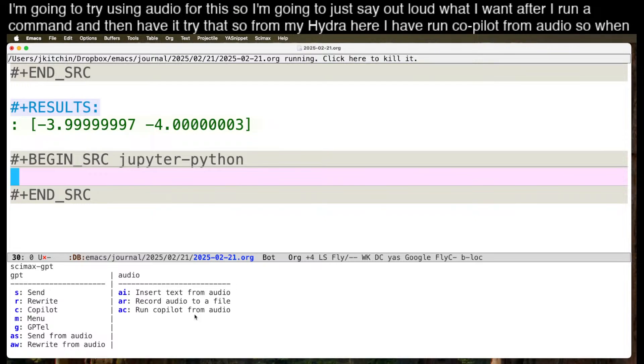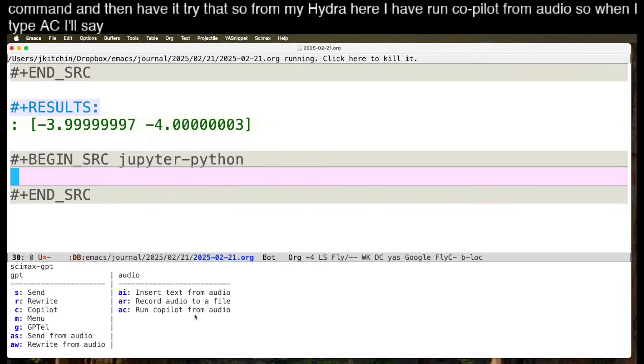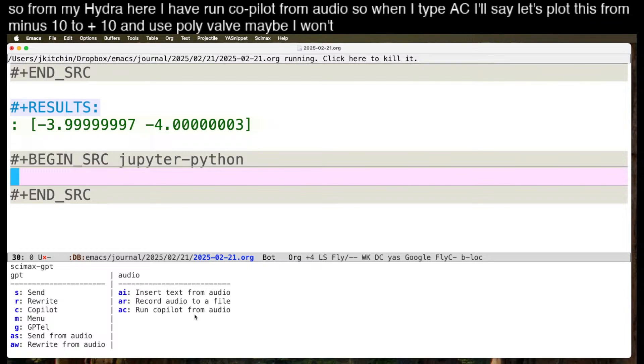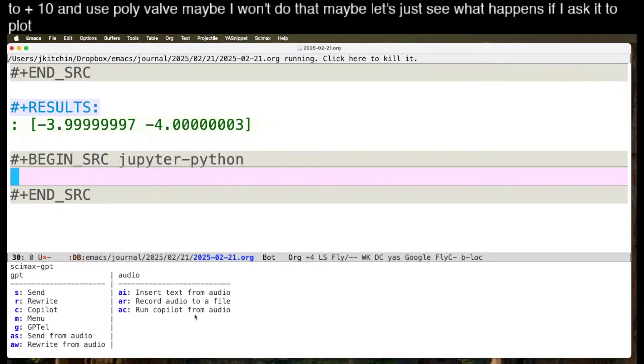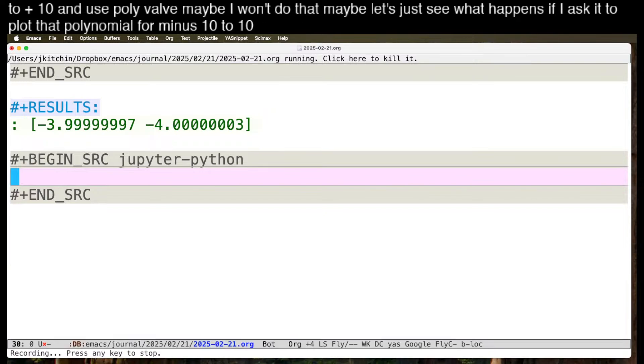So from my Hydra here, I have run Copilot from audio. So when I type AC, I'll say let's plot this from minus 10 to plus 10 and use PolyVal. Maybe I won't do that. Maybe let's just see what happens if I ask it to plot that polynomial for minus 10 to 10.